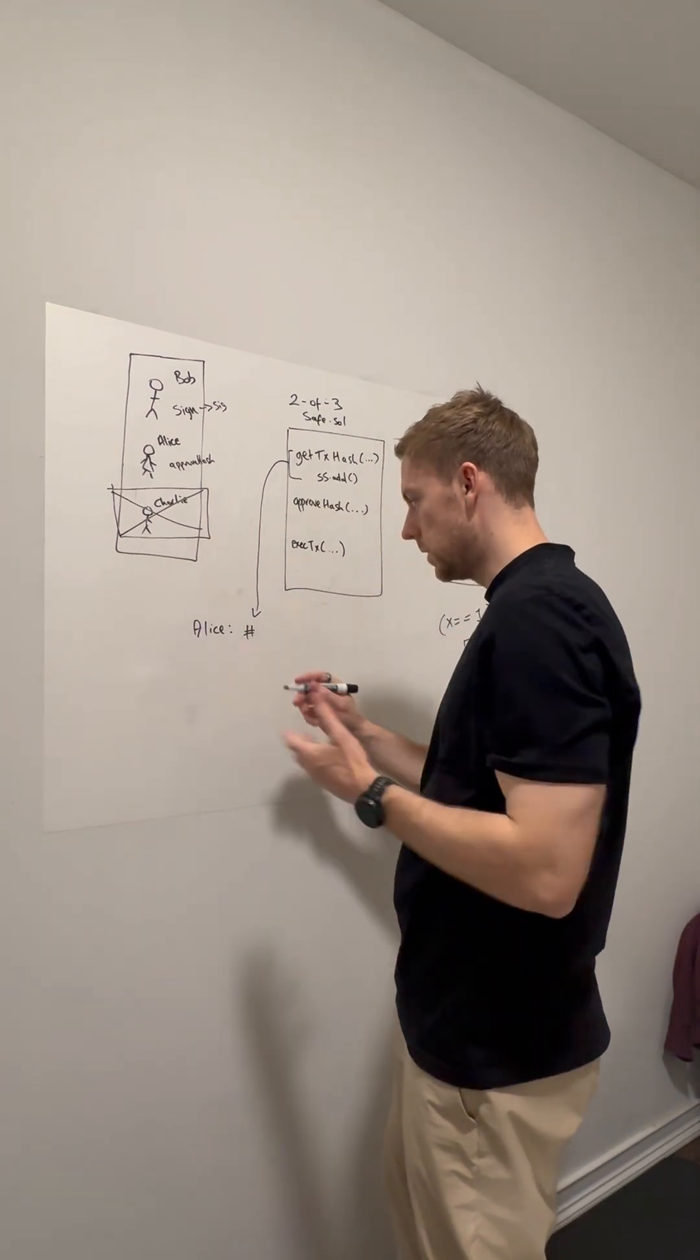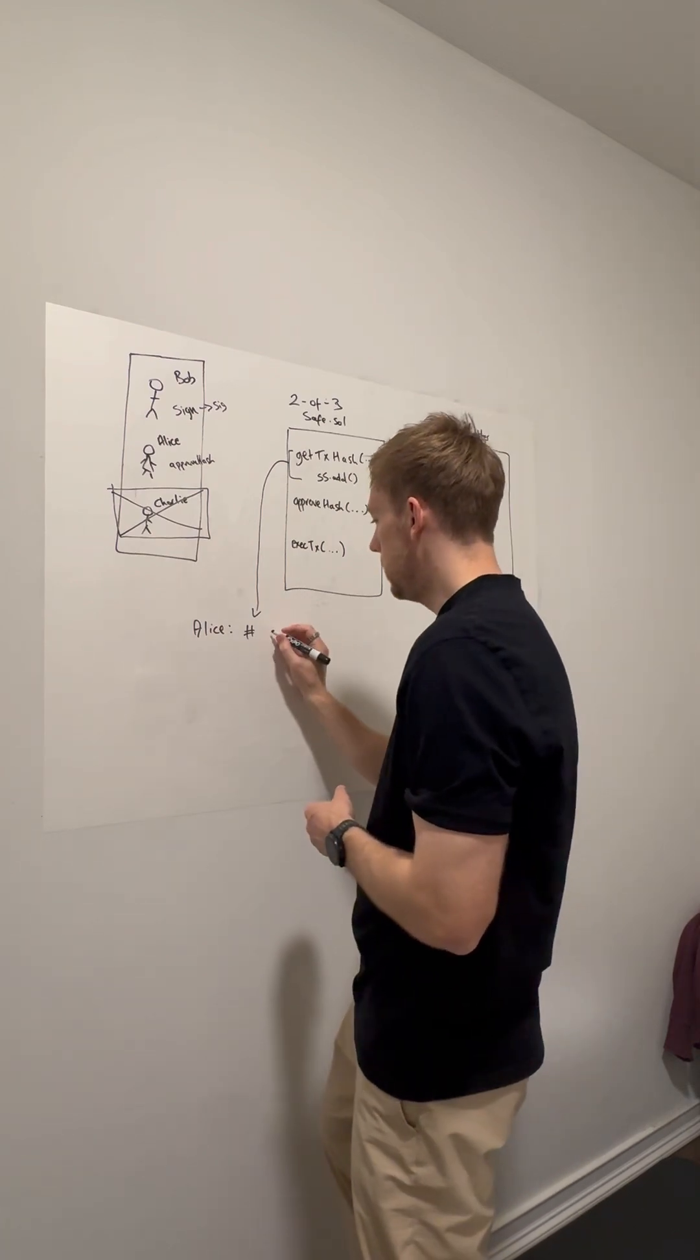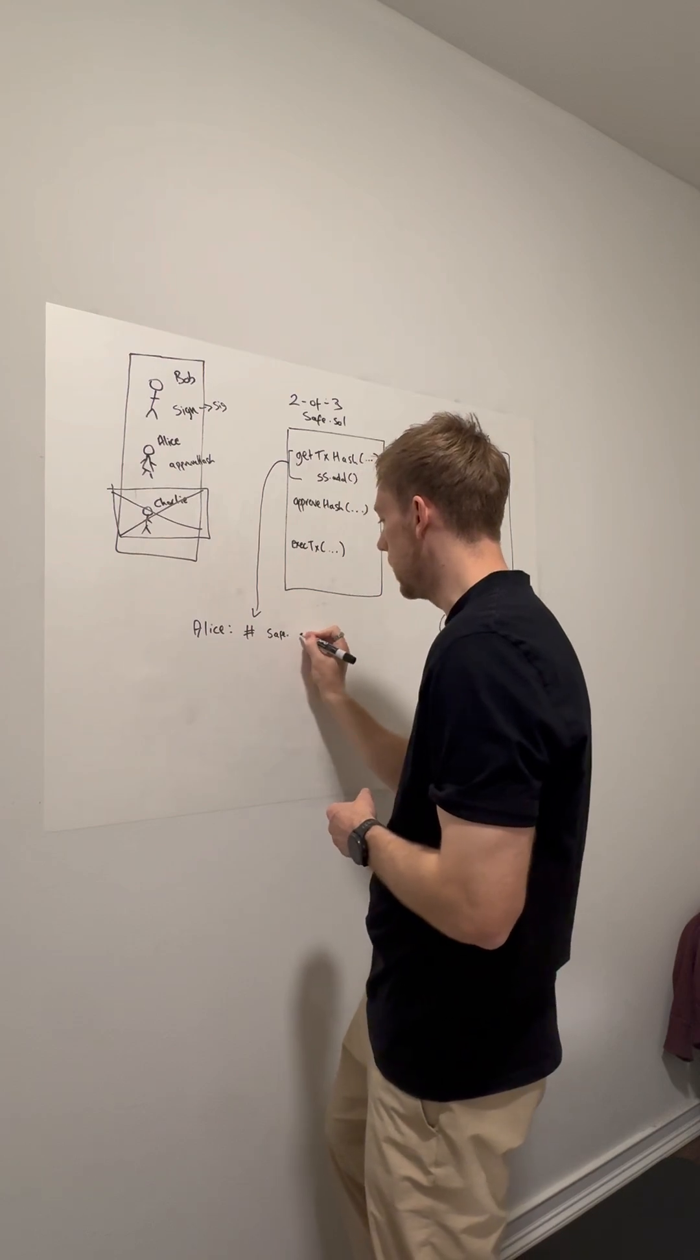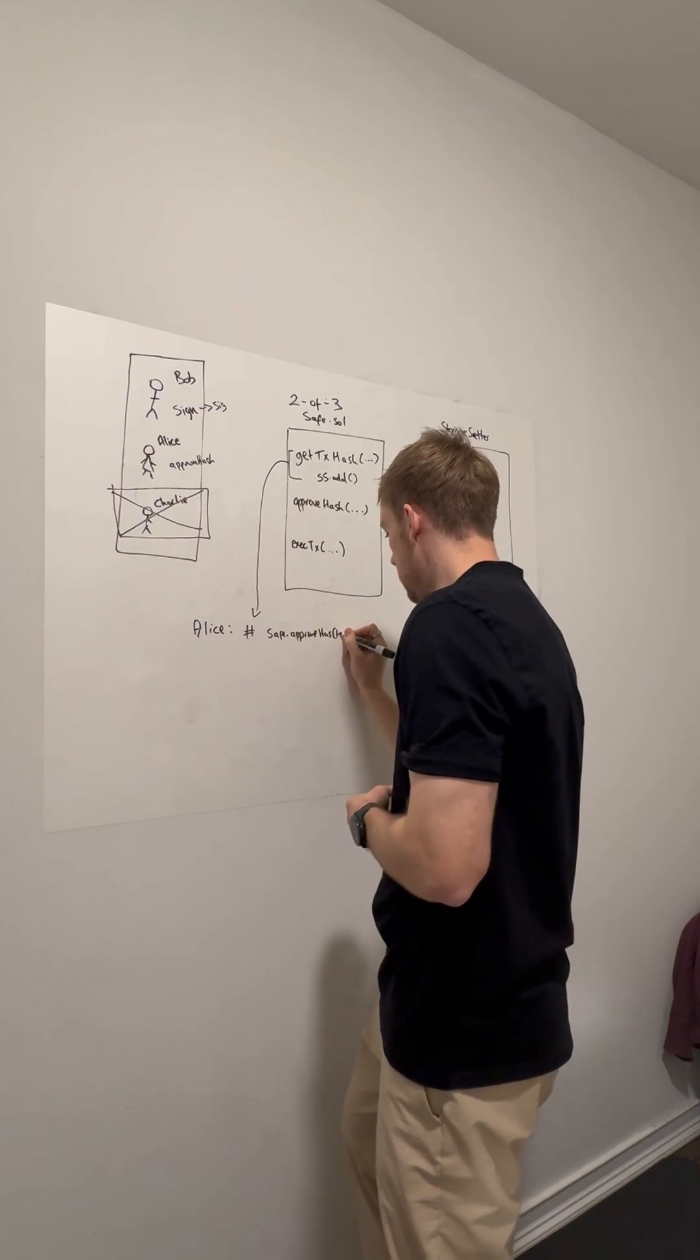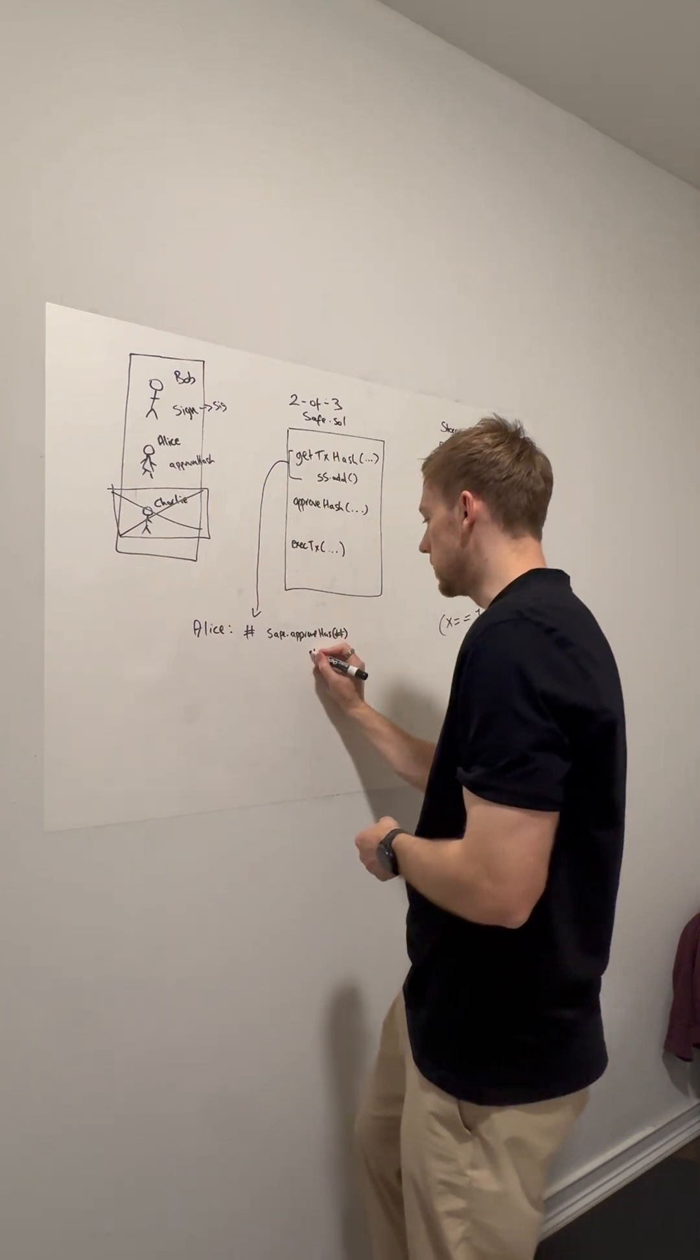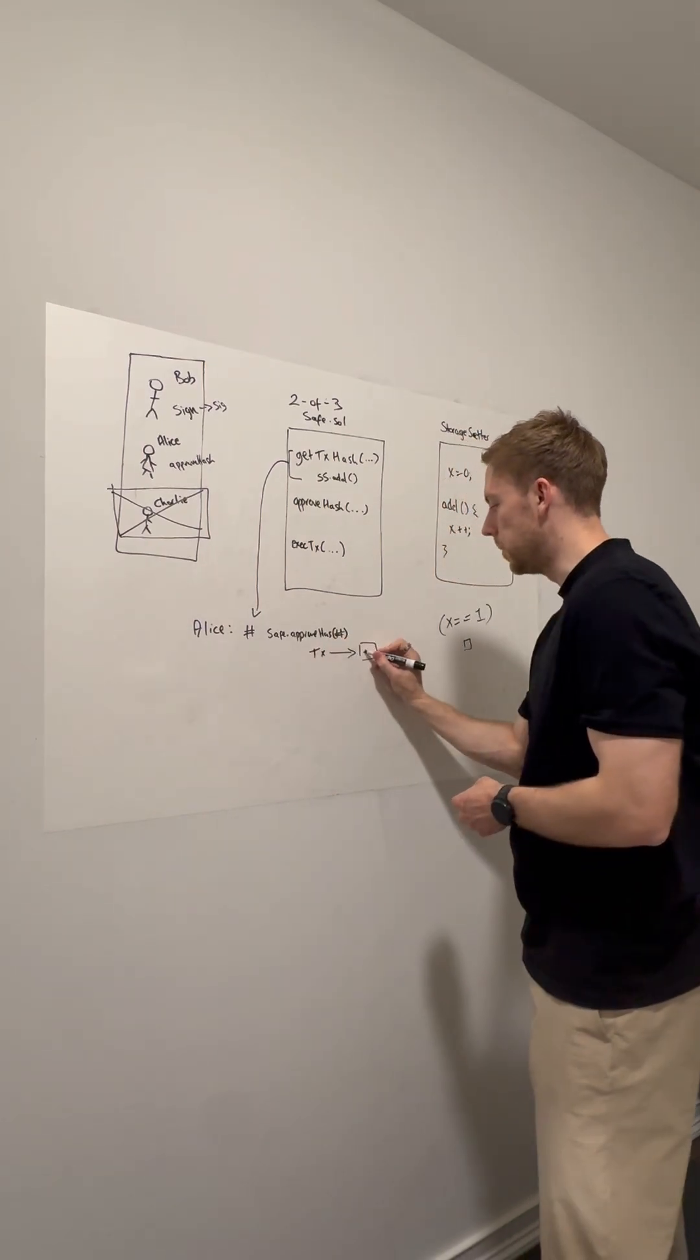Then, using her wallet—like MetaMask, Phantom, whatever wallet you have—Alice is going to call safe.approvehash and pass in the hash. She's going to sign that with her wallet, send that transaction, and it gets included into a block.